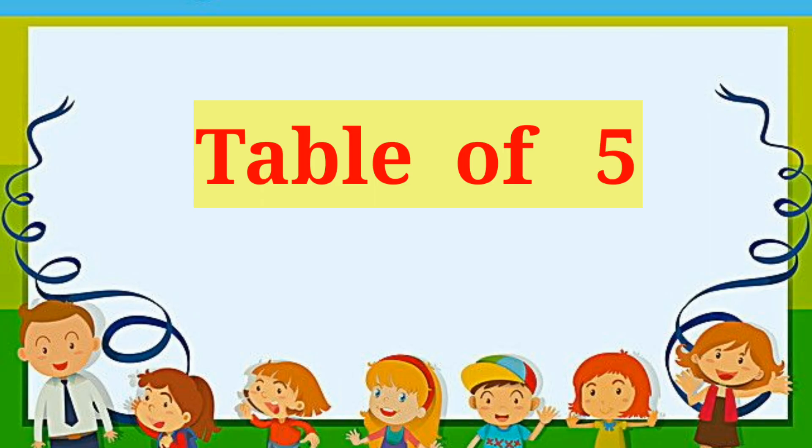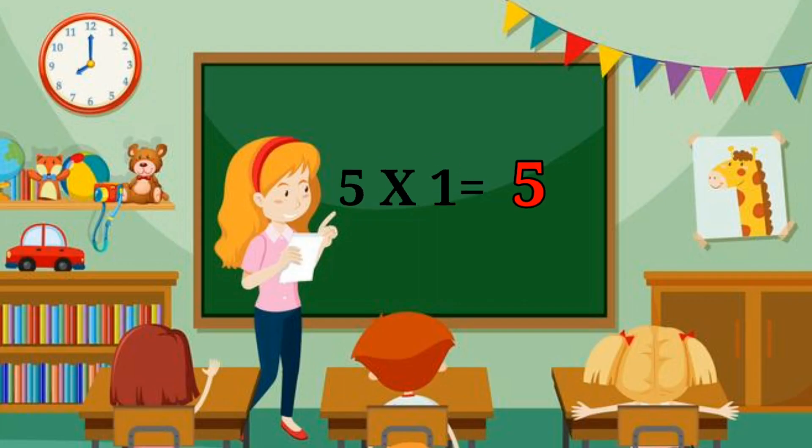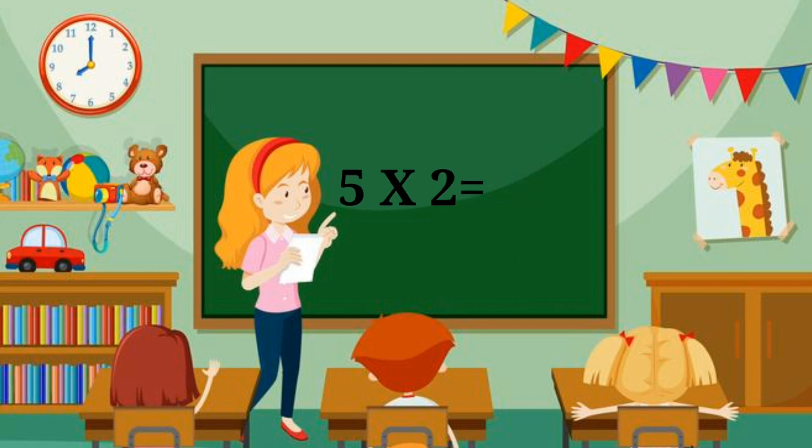Now let's start, table of 5. 5 1's a 5, 5 2's a 10, 5 3's a 15, 5 4's a 20, 5 5's a 25, 5 6's a 30, 5 7's a 35, 5 8's a 40, 5 9's a 45, 5 10's a 50.